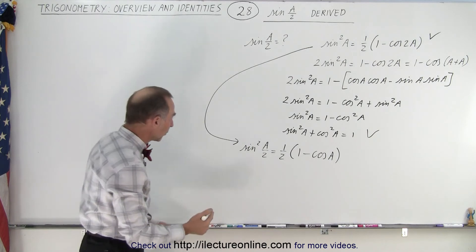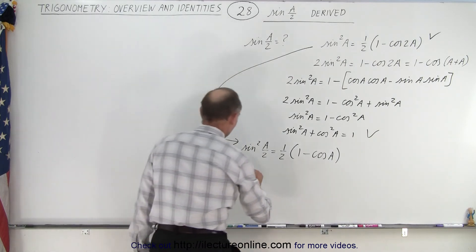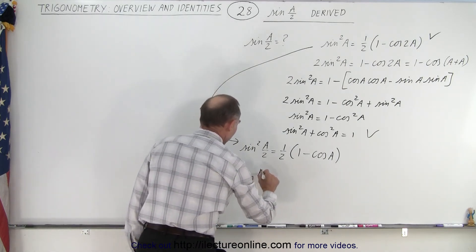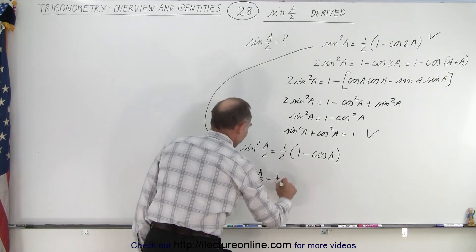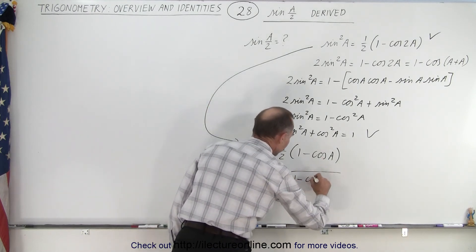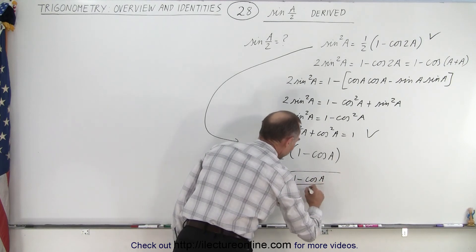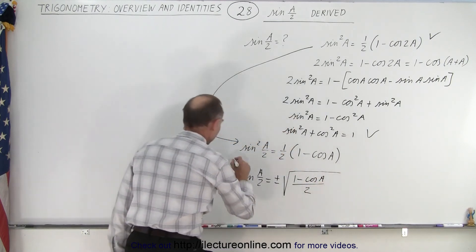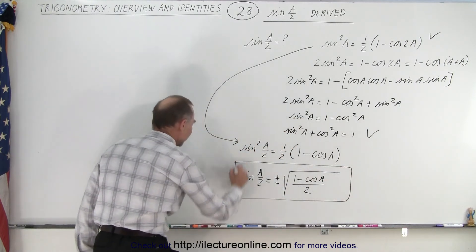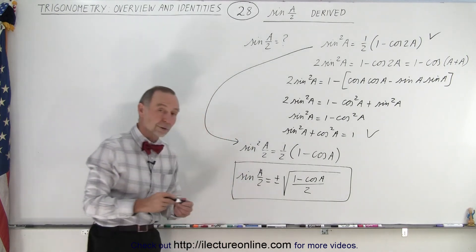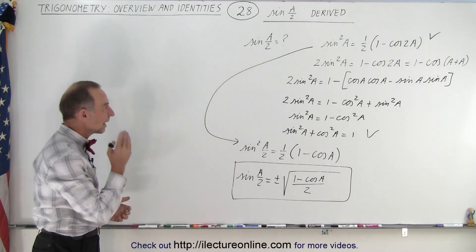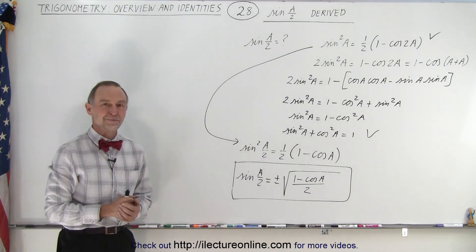And then we can take the square root of both sides. So now we can write that the sine of A over 2 is equal to plus or minus the square root of one minus the cosine of A, divided by 2. And that is the equivalent expression for the sine of the half angle — in other words, the identity of the sine of the half angle, and that is how it's derived.